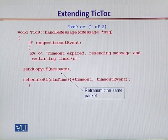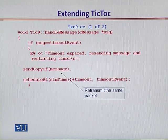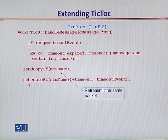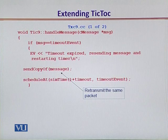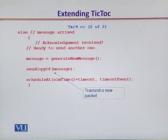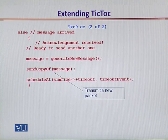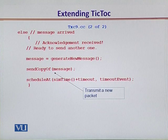If we look at the C++ code, the upper part of the code essentially remains the same. We observe that if the timeout event occurs and this is a self-message — because it is the self-message that is going to tell node TIC that the expected packet from the TOC side has not been met and you need to retransmit — therefore, TIC is going to call the function sendCopyOf and send the same message. If the message arrives in time, TIC does not have to send the old copy; it has to send out a fresh packet. The message is updated with generateNewMessage and then this new message is sent via sendCopyOf. So essentially, sendCopyOf is now carrying the message which has just been generated.